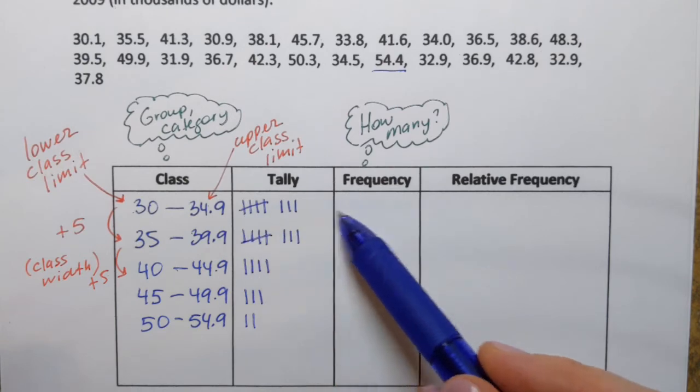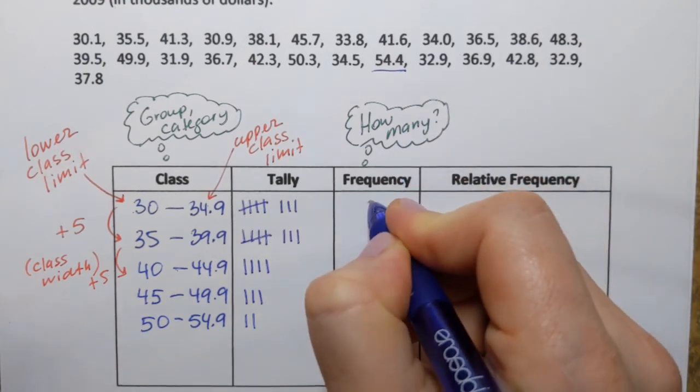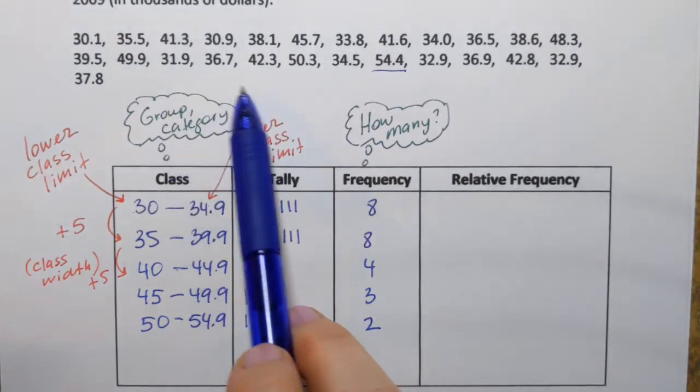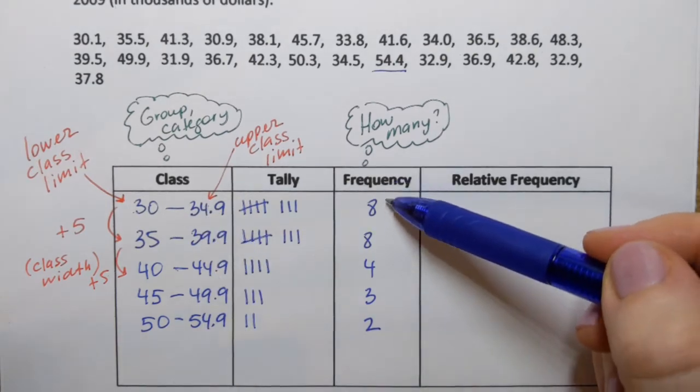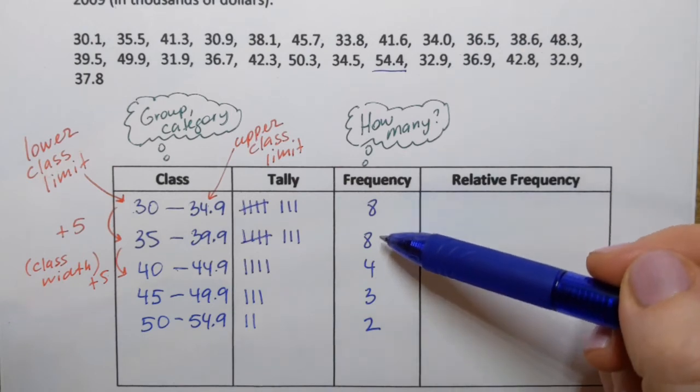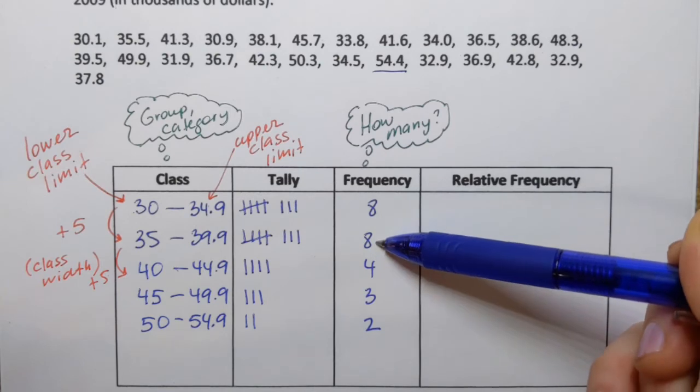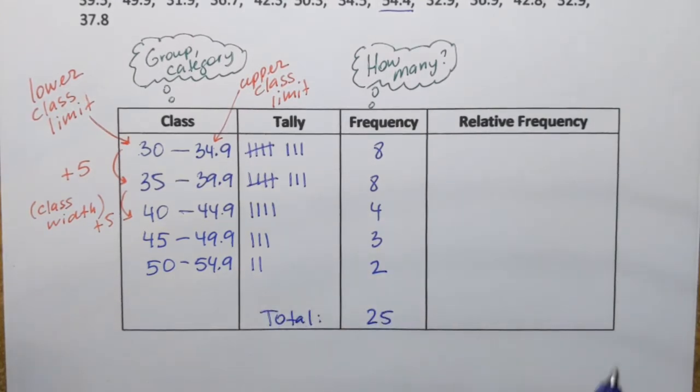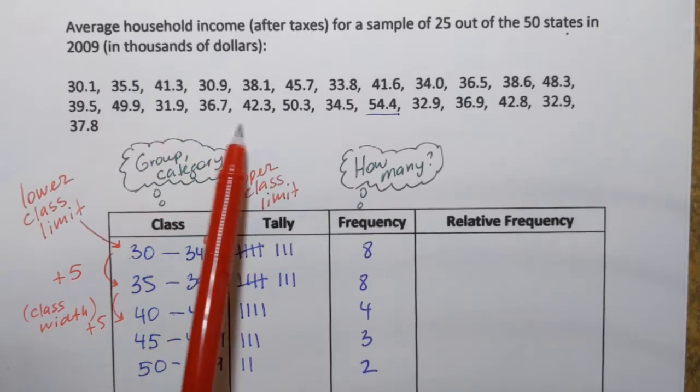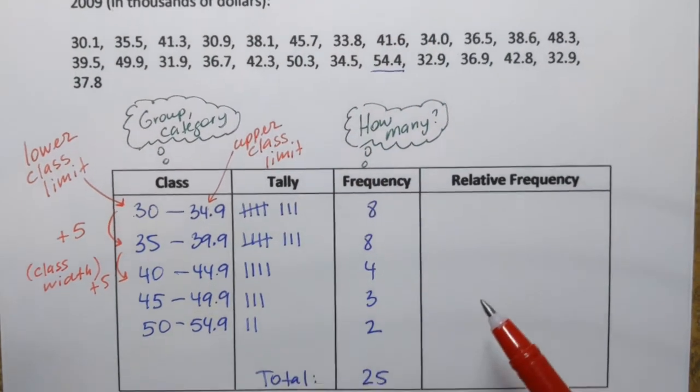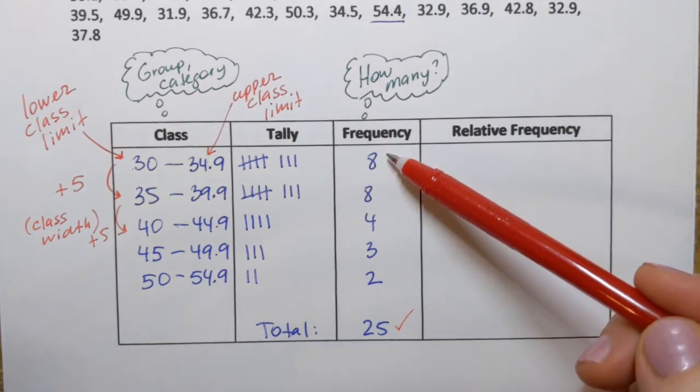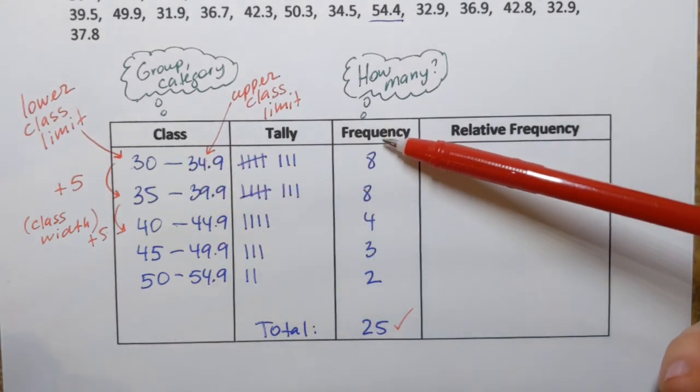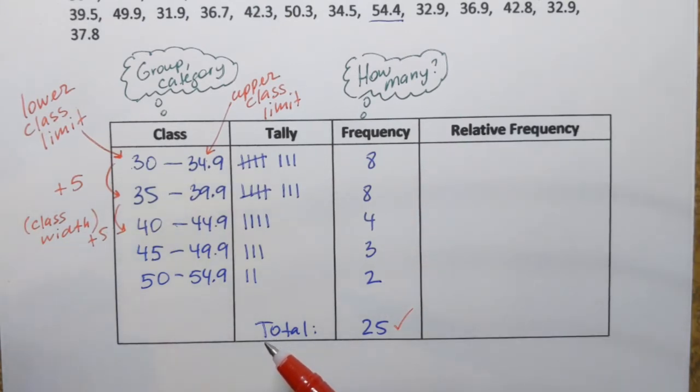So this is what I got for tally marks. And now I just have to record frequency. So frequency tells me how many observations from the data set is in each class. Once you record frequency, a very good idea to do at this point is to double check if those numbers add up to the right total. So if I add 8 plus 8, 16, 20, 23, 25. So if I add them up, I will get a total of 25. And that will help me, or give me a chance to catch mistakes. And I remember that we're given here information about 25 states. So that means that there is a good chance that we counted observations correctly and placed them in the right classes.